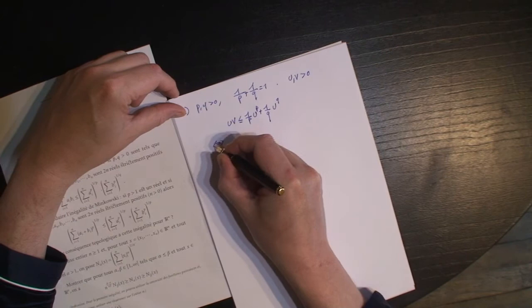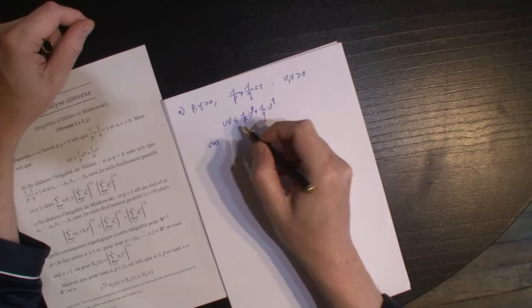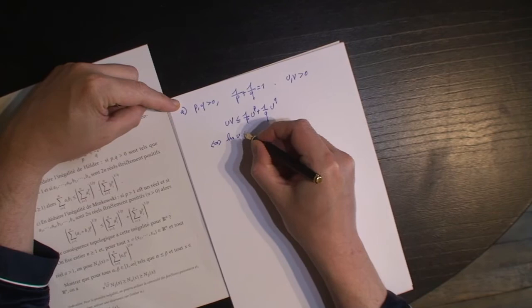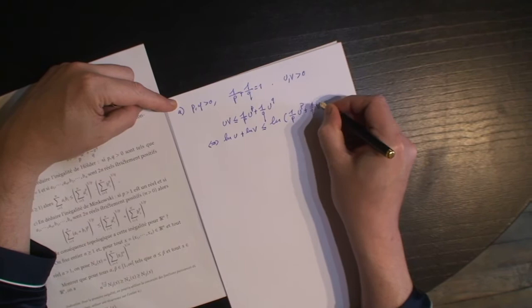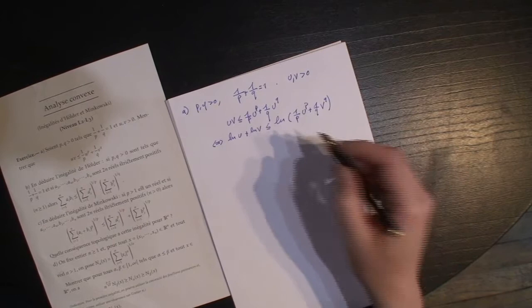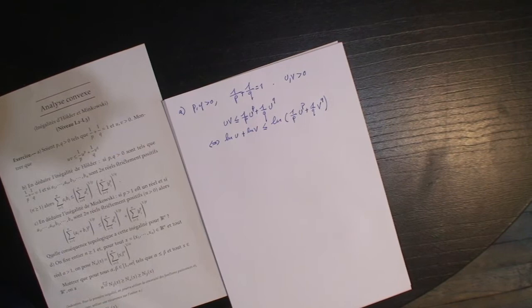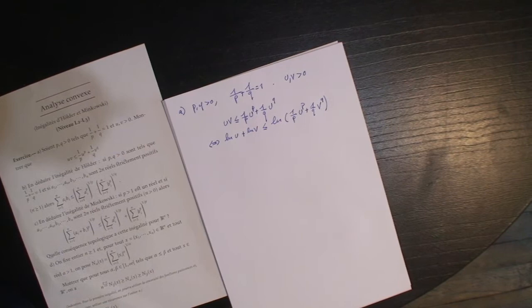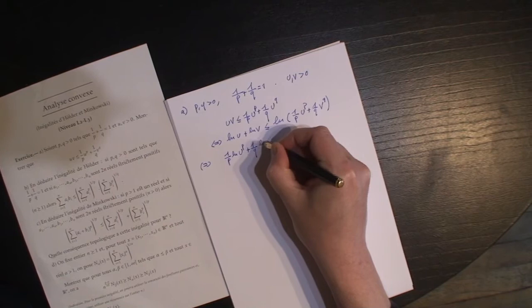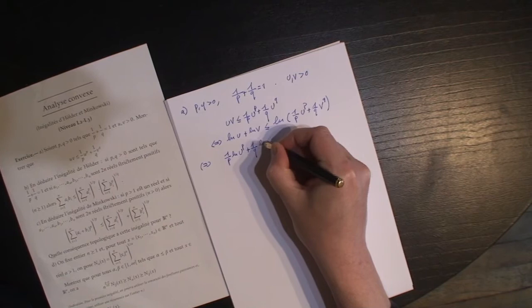C'est très exactement une inégalité de convexité, parce que ça équivaut — vu que U et V sont strictement positifs, je peux utiliser le logarithme qui est une fonction croissante — à log(U) + log(V) ≤ log((1/P)·U^P + (1/Q)·V^Q). Vous voyez que ça vous incite à considérer une inégalité de concavité puisque log est concave, pour les réels U^P et V^Q et pour le système de poids 1/P, 1/Q. Il suffit de remarquer que log(U^P) = P·log(U), donc pour retrouver log(U) il suffit de mettre 1/P ici, et de même avec 1/Q.